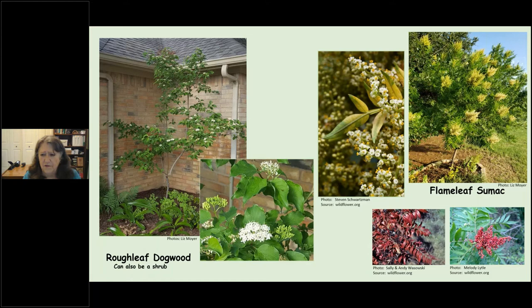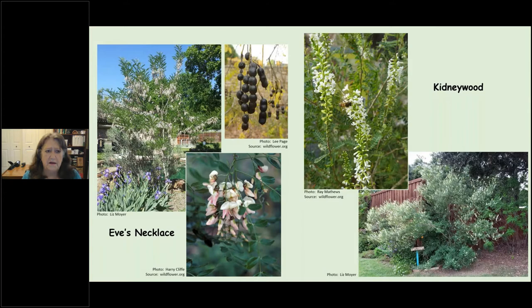None of these trees are really aggressive spreaders — I'll let you know when we get to one that is. Eve's necklace is a fun plant that can grow over 20 feet but usually doesn't. It has beautiful pink and white flowers like a wisteria, and in summer it makes seed pods that look like black pearls — that's why it's called Eve's necklace. Bees and butterflies love its blooms.